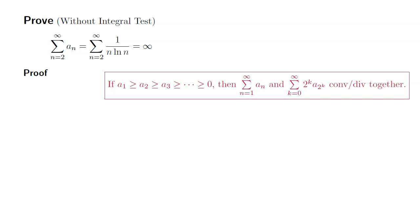Let's say you have a non-negative decreasing sequence a_n. Then the summation n goes from 1 to infinity of a_n, and the summation k goes from 0 to infinity of 2^k times a sub 2^k converge together or diverge together. All right, so let's try to use this.